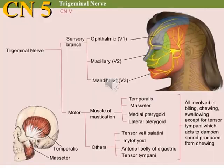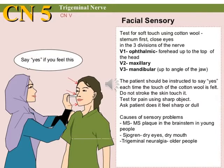The fifth cranial nerve is the trigeminal nerve, which has a sensory branch and a motor branch. The sensory branch receives sensation from the face through the ophthalmic, maxillary, and mandibular divisions. The motor branch supplies the muscles of mastication: temporalis, masseter, medial and lateral pterygoids, and other muscles like tensor veli palatini, mylohyoid, and tensor tympani. We examine each division separately — ophthalmic, maxillary, and mandibular — comparing sensation in each division.